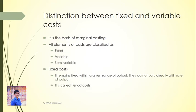Under marginal costing, all elements of cost are classified as fixed, variable, and semi-variable. The marginal cost is essentially the variable cost.